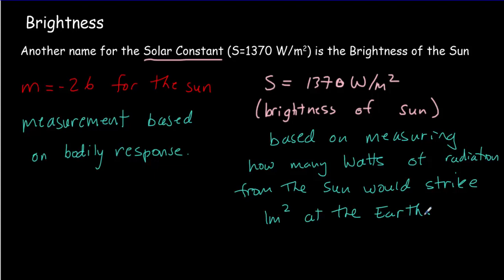So these two numbers, in essence, are measuring the same thing. One's based on bodily response, one is based on a technical measurement. You don't really need to know about the apparent magnitude, but I think you understand the idea of a solar constant or brightness better if you've got that background.